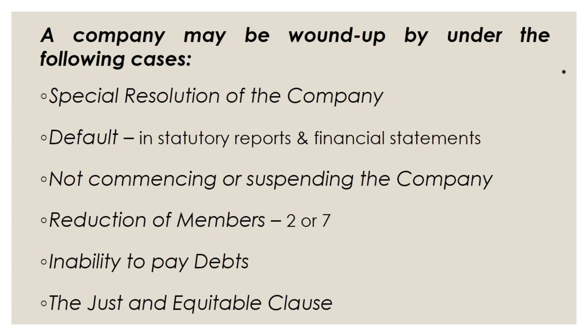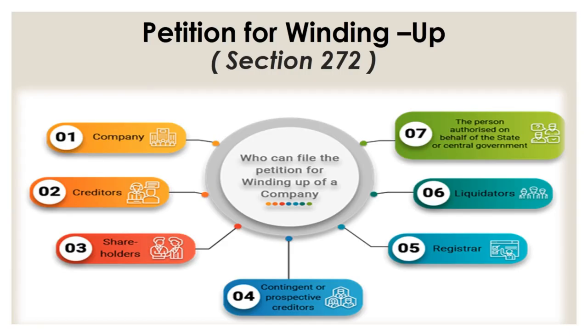Next is reduction of members — if the number of members falls below seven in the case of a public company or below two in the case of a private company, the company must be wound up. Next is inability to pay debts — if the company is unable to pay off its debts, the company must be wound up. The last one is the just and equitable clause — if the court is of the opinion that it is just and equitable that the company should be wound up.